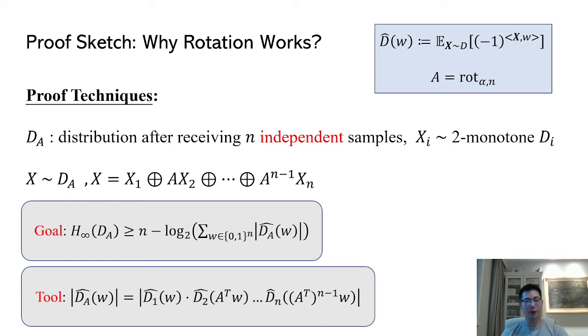However, we can hardly compute the min entropy from the probability mass function because the convolutional form is infeasible to compute. The Fourier coefficients arise naturally in our setting because they interact nicely with both convolution and linear transformations. So our goal becomes computing the sum of Fourier coefficients of dA.